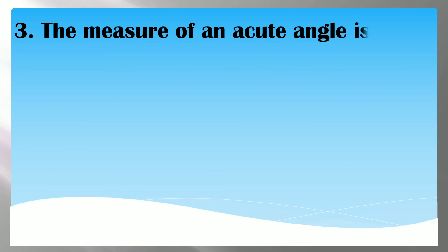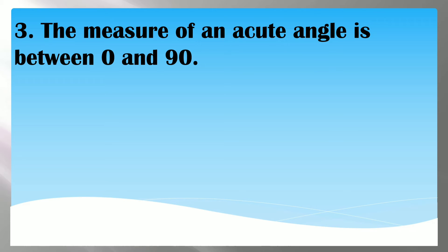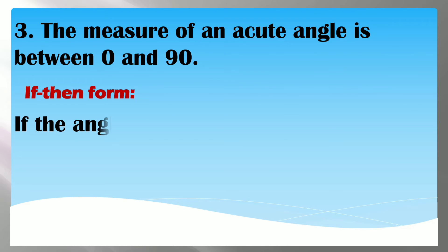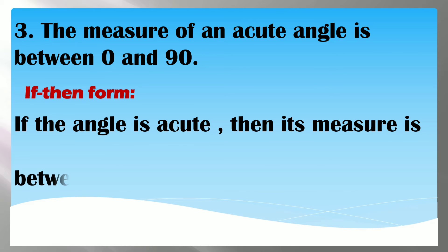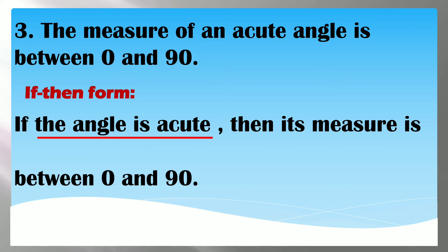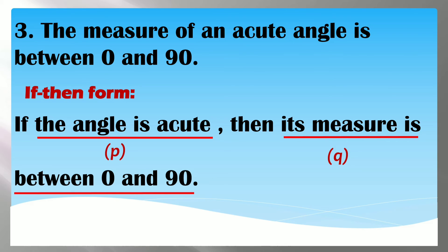For number 3: 'The measure of an acute angle is between 0 and 90 degrees' — we are talking about the acute angle. A right angle is a kind of angle, so its if-then form is: 'If the angle is acute, then its measure is between 0 and 90 degrees.' Our hypothesis is 'the angle is acute' and our conclusion is 'its measure is between 0 and 90.'